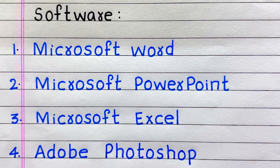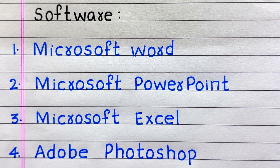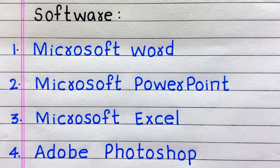First example of a software is Microsoft Word. Second, Microsoft PowerPoint. Third, Microsoft Excel. Fourth, Adobe Photoshop.